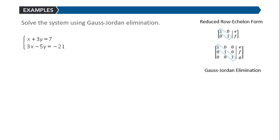We start with our augmented matrix which is 1, 3, 7. Then we have 3, negative 5, negative 21.